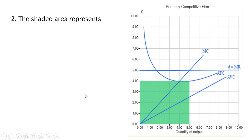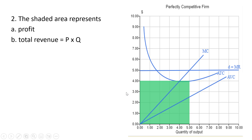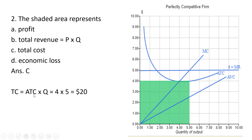Question two. The shaded area represents — so here we have a perfectly competitive firm. At five units of output, average total cost is four dollars. This shaded area is going to represent total cost. Total cost is just average total cost times quantity. So at five units of output, average total cost is four, making this a four by five rectangle, so total cost would be twenty dollars.